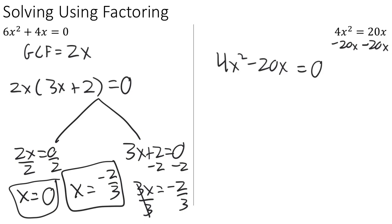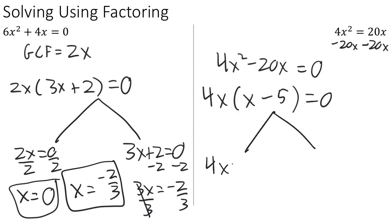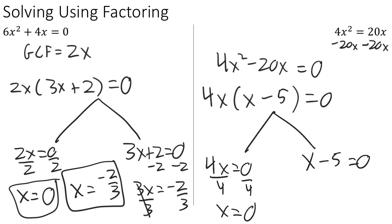Now we can factor out the common factor 4x from the left-hand side, leaving us with 4x(x − 5) = 0. Now we have two things being multiplied together equaling 0, so we apply the zero factor principle. Either 4x = 0 or x − 5 = 0. Dividing by 4 gives x = 0 as one solution. Adding 5 to both sides gives x = 5 as the second solution. So our two solutions are x = 0 and x = 5.